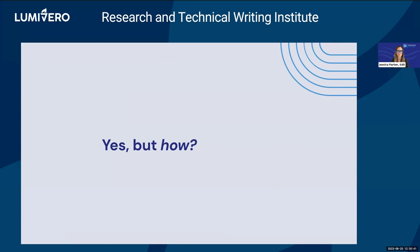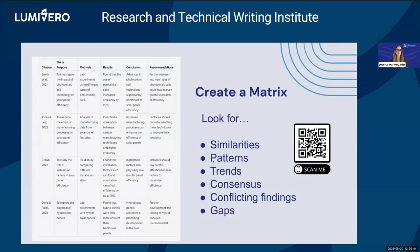Create a matrix — I have a QR code here because this could be a whole presentation in itself — how to create a literature matrix and analyze it for similarities, patterns, and trends. If you scan that, it'll take you to a YouTube video that a member of my team filmed several years ago about how to create an annotation table, also called a literature matrix, and use it to look for all of these different similarities, patterns, and trends so that you can move on to the process of writing claims based on what you're seeing within your literature matrix.